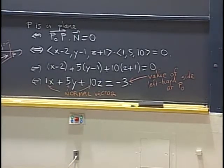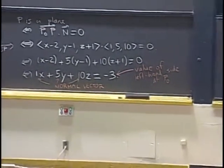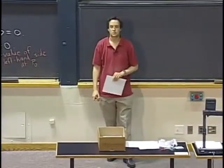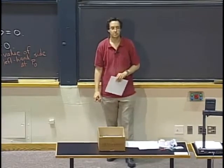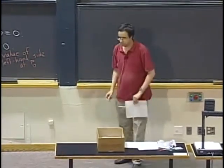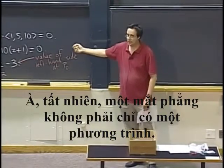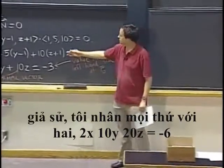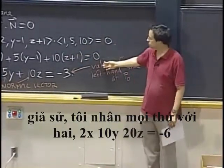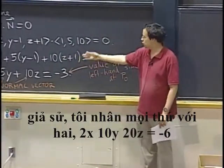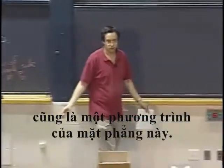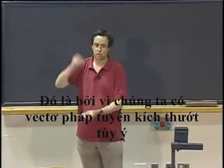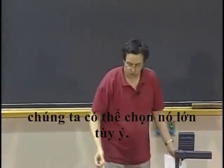OK, any questions about that? No? OK, by the way, of course, a plane doesn't have just one equation. It has infinitely many equations because if I take instead, if I multiply everything by 2, 2x plus 10y plus 20z equals minus 6 is also an equation for this plane. That's because we have normal vectors of all sizes. We can choose how big we make it.